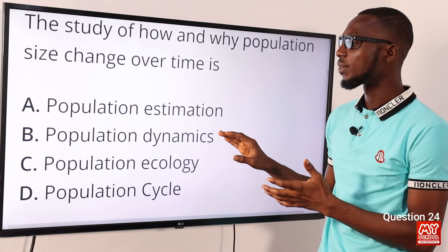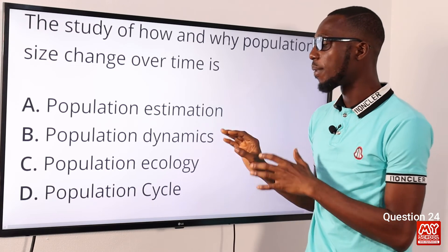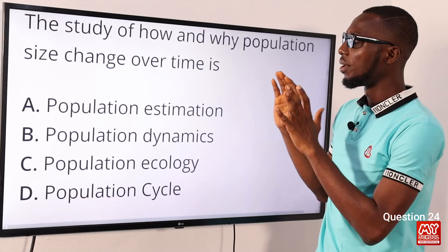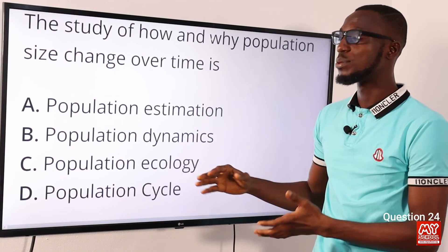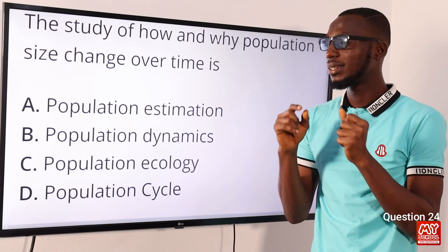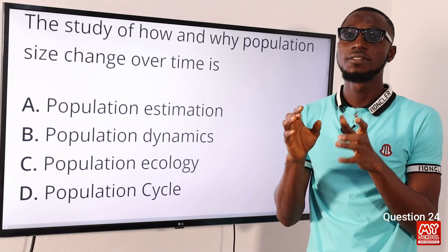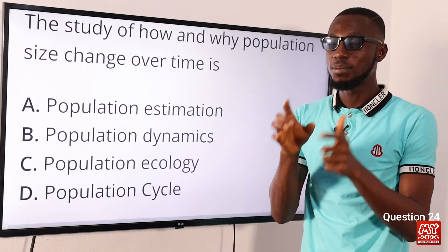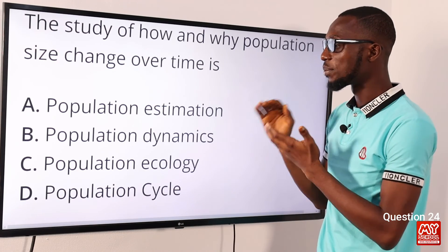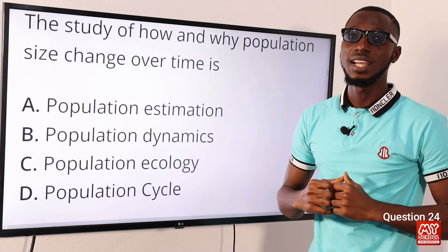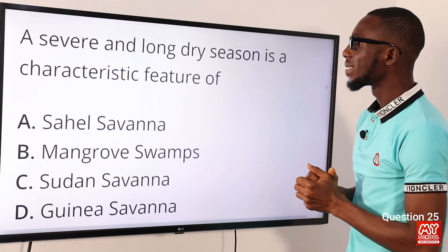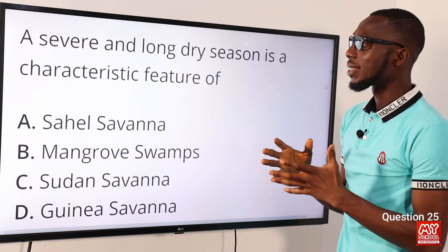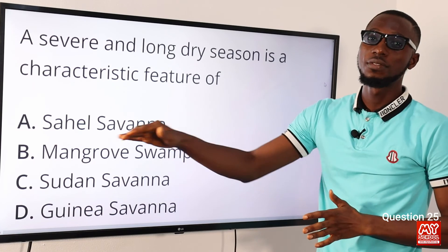Question twenty-four: the study of how and why population size changes over time is what? The correct option is option B — population dynamics. Being able to correctly define this term helps you identify the correct option easily.